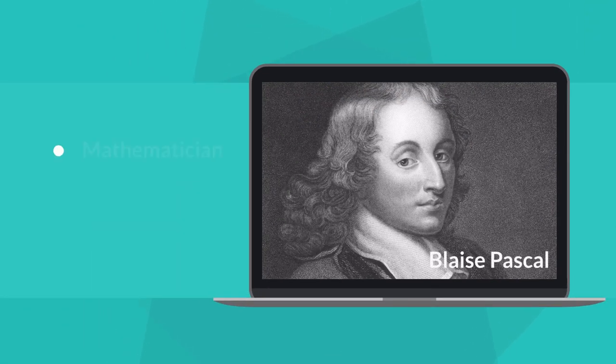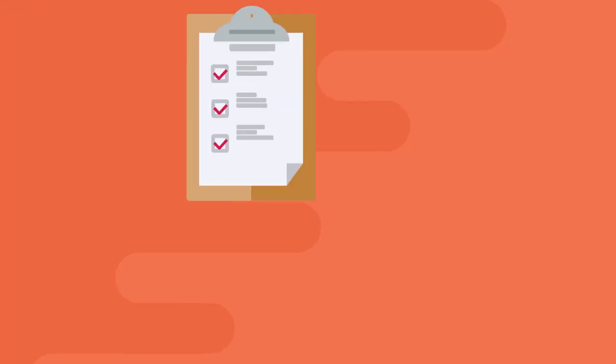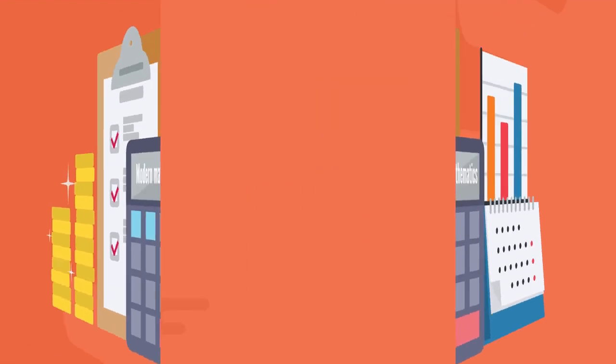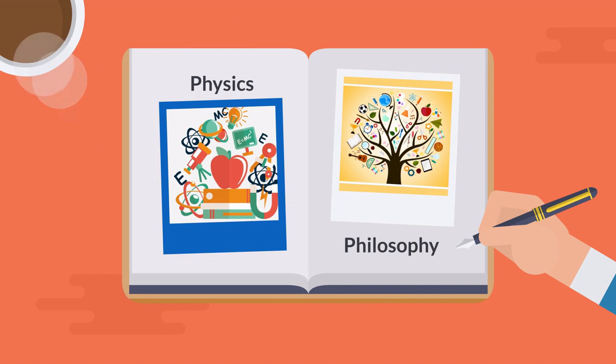Blaise Pascal was a French mathematician, physicist, and philosopher who lived during the 17th century. He is one of the most significant figures in the development of modern mathematics, but his contributions to the fields of physics and philosophy were significant too.